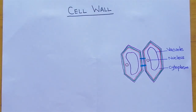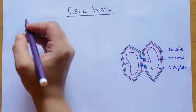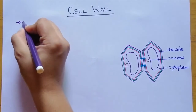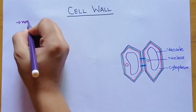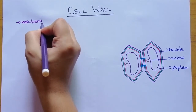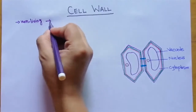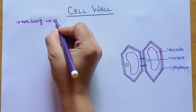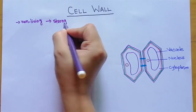Hey learners, welcome to my channel Ahmad Coaching. Today we are going to talk about cell wall. Cell wall is an important component of plant cell. It is a non-living but strong component of the cell.